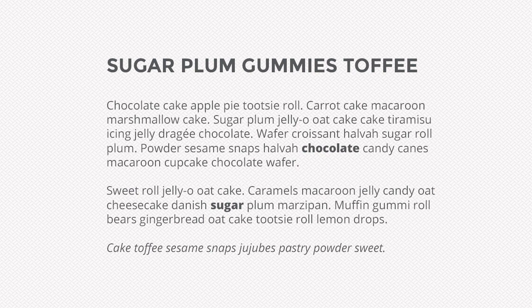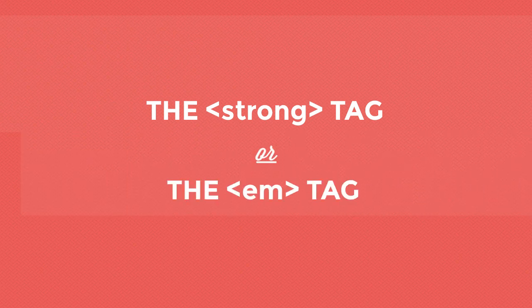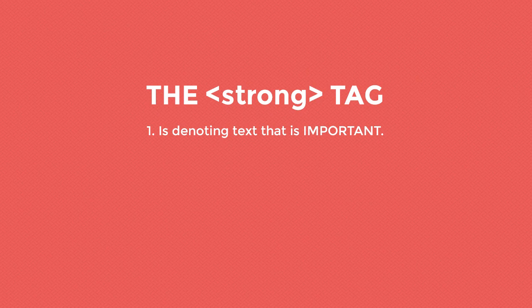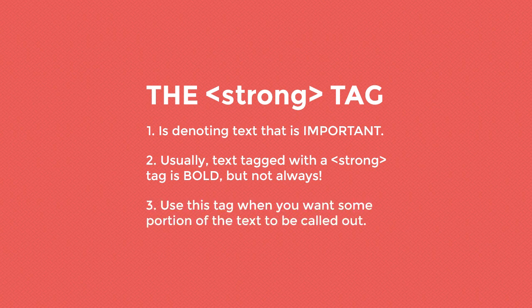The rest of the text will fall between two P or paragraph tags. Now, within any text tag, such as a P tag or a header tag, you can emphasize bits of text. You have two options to do this: the strong tag or the EM tag. The strong tag is meant to denote text that is important. Use this tag when you want some portion of the text to be called out.